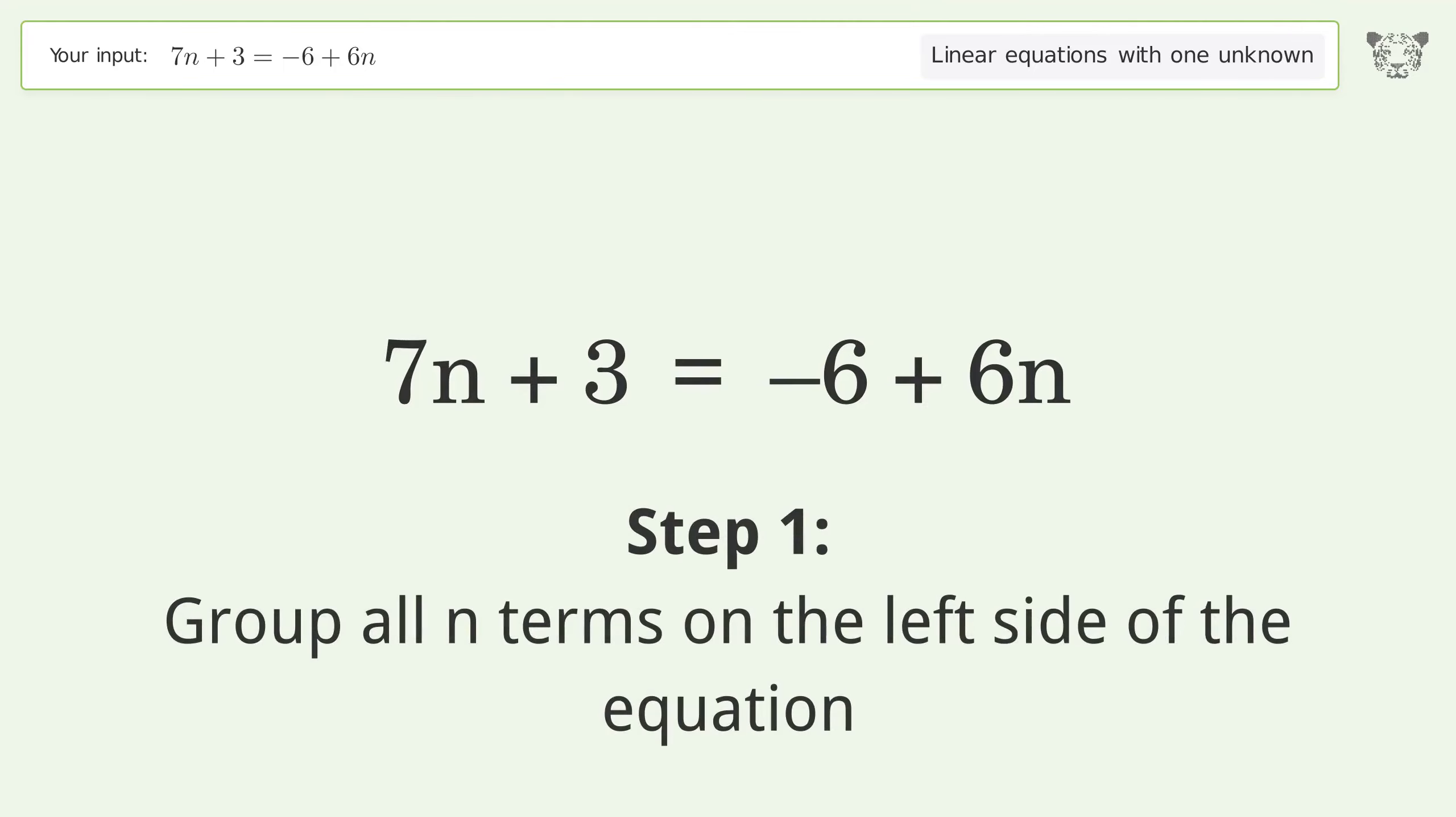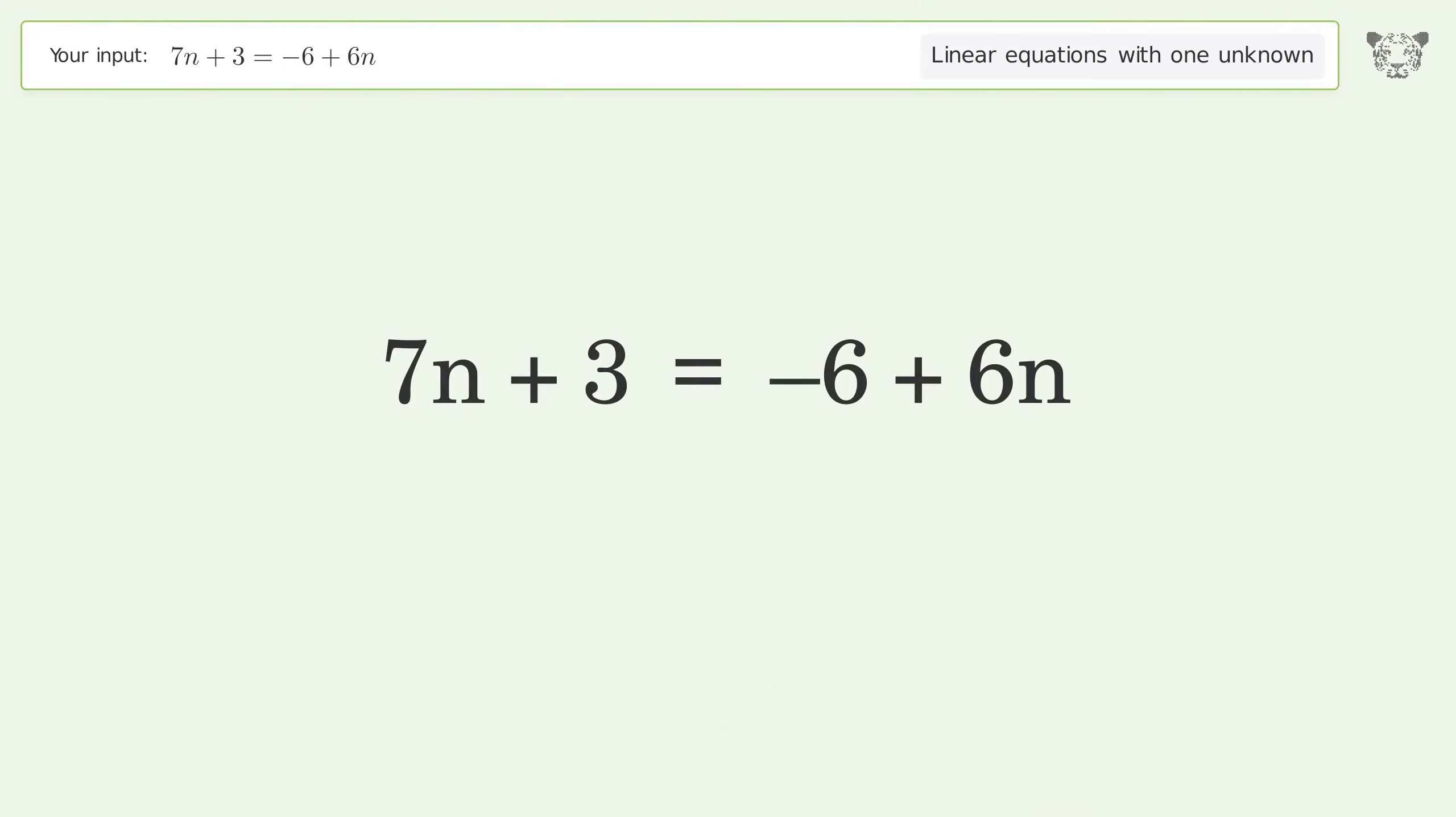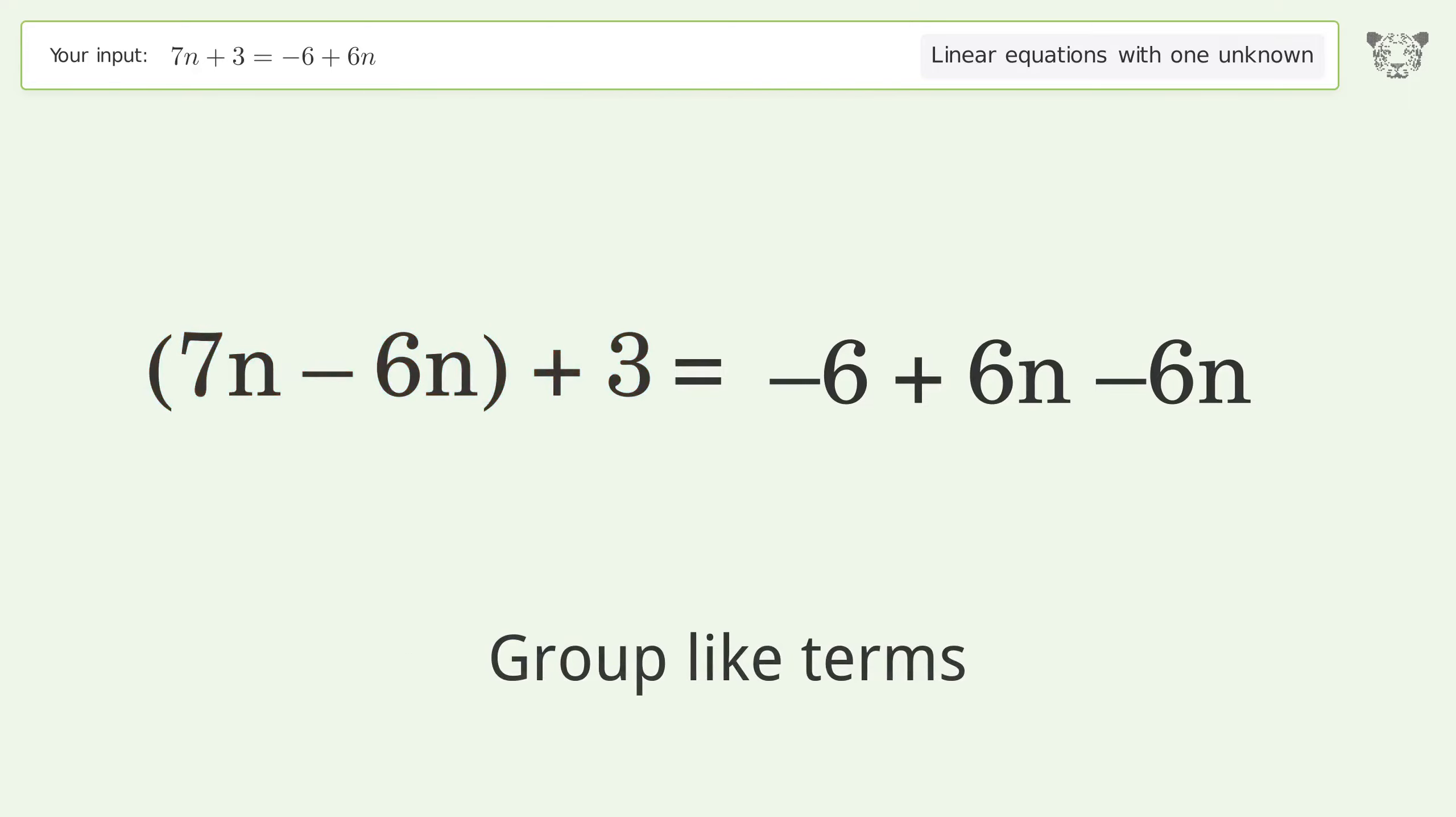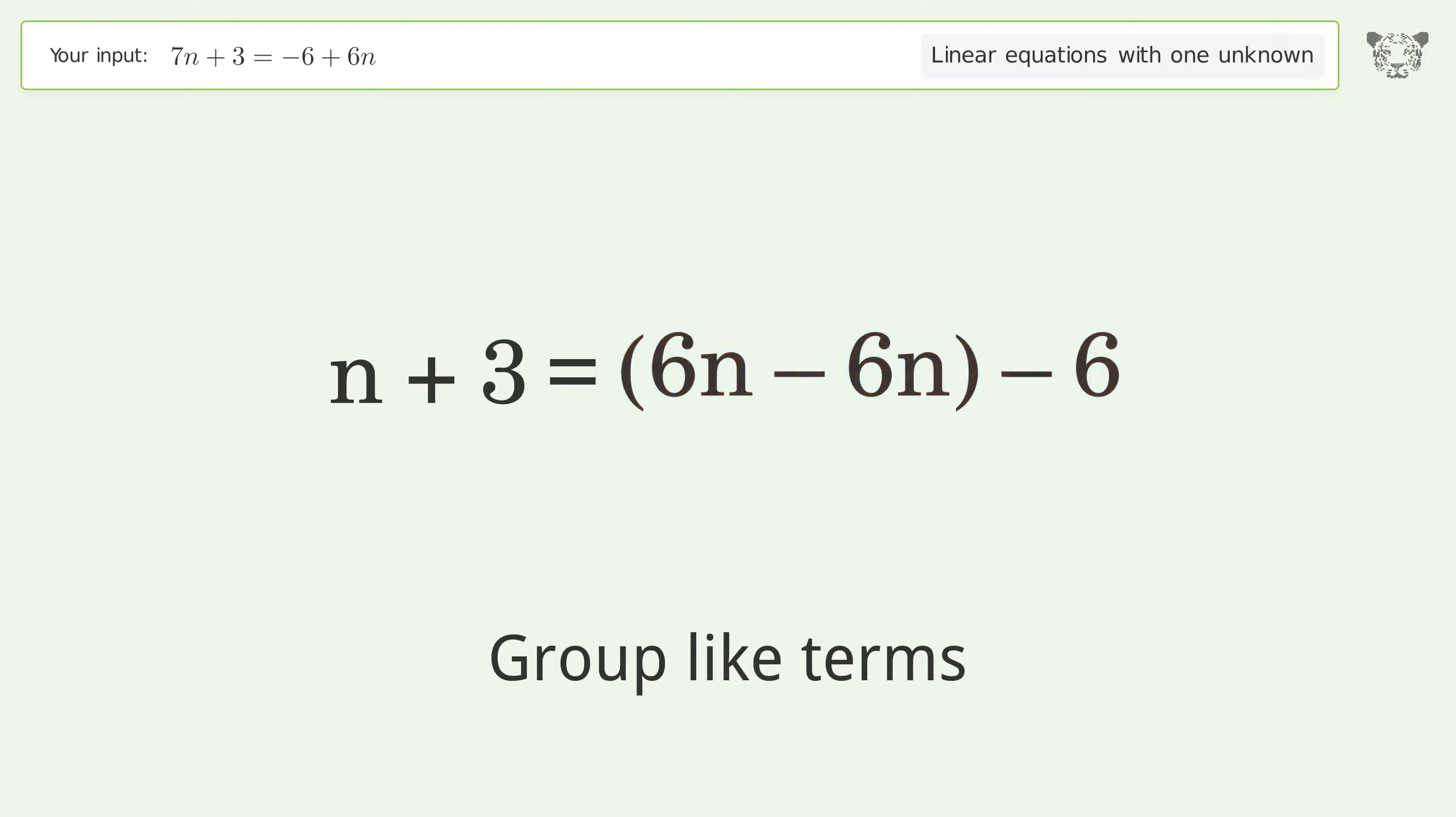Group all n terms on the left side of the equation. Subtract 6n from both sides. Group like terms and simplify the arithmetic. Group like terms and simplify the arithmetic.